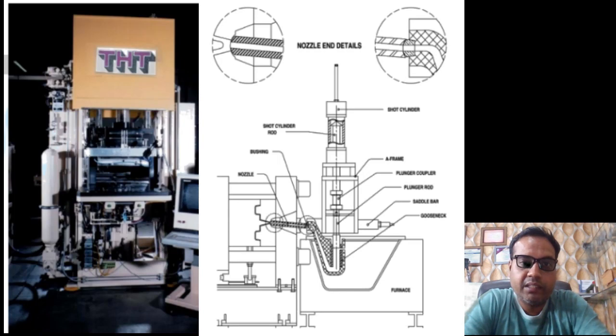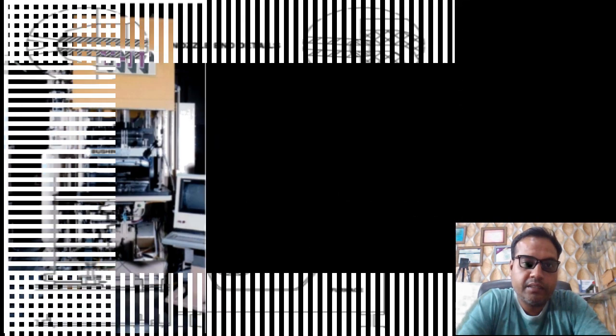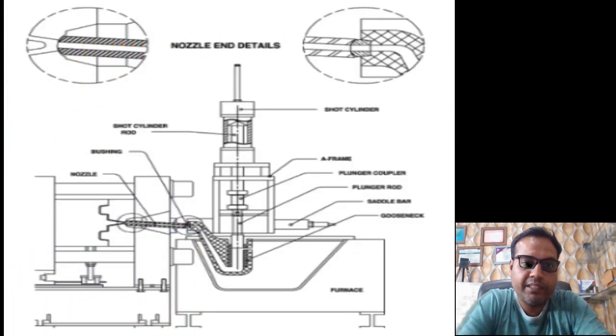The hot chamber machine shown in this figure has the short sleeve mounted vertical with the nozzle at about an 80-degree angle from the parting line.